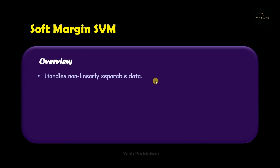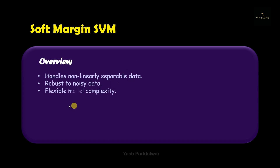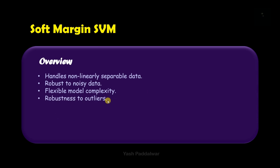Soft margin SVM handles non-linearly separable data, which means data that cannot be separated with a single linear line or hyperplane. Soft margin SVM is robust to noisy data — that means it works even if outliers are present. Noisy data or outliers are data points that do not behave like normal data points. So even if such data is present, soft margin SVM can be used. When soft margin SVM is used, the model complexity is flexible. Hence it is widely used.